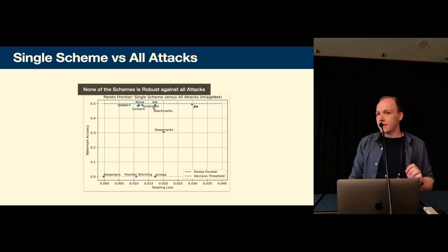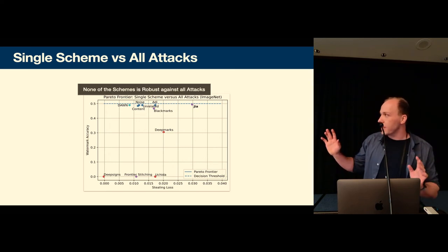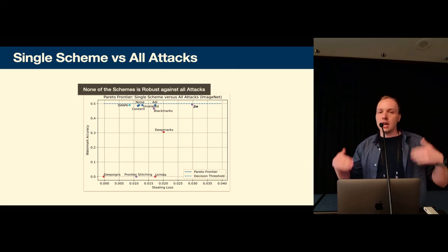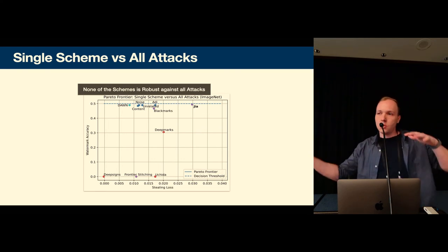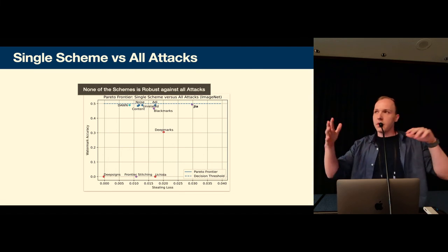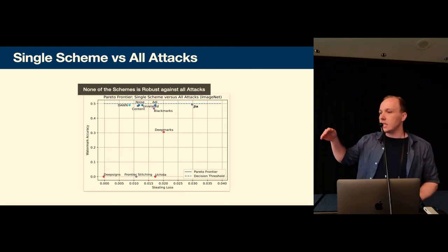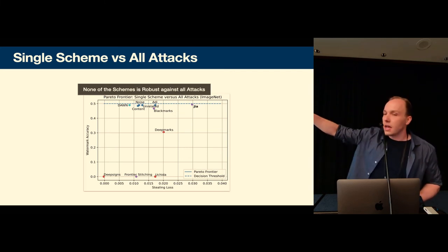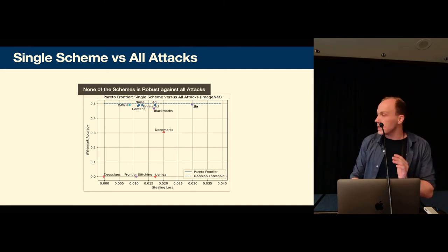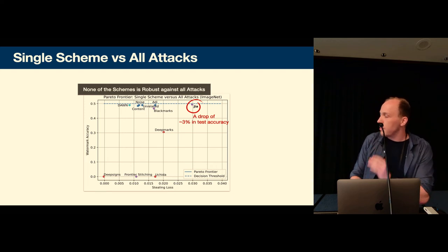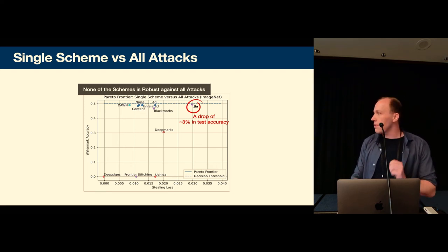Okay our main result of this paper is that a lot of the schemes or all of the schemes that we observed were not robust in practice against a highly capable attacker. So on the x-axis we have what we call the stealing loss which is the loss that the attacker has when he steals the model and on the y-axis we have the watermark accuracy and as I said it's scaled so everything that's lower than 0.5 means it's not robust and none of the schemes is robust and the best scheme incurs a test accuracy drop of three percent.